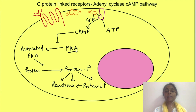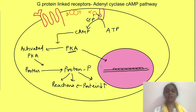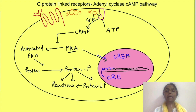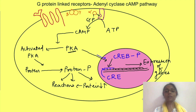Protein kinase A can also increase or decrease the transcription of some genes. Near these genes is a region known as the cAMP responsive element (CRE). A subunit of protein kinase A moves to the nucleus and phosphorylates the cAMP responsive element binding protein (CREB), which then binds to CRE and alters transcription of genes where CRE is present. In this pathway, cAMP acts as a second messenger.